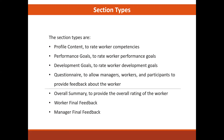There are also section types. First is profile content to rate workers' competencies. Then we have performance goals to rate workers' performance goals. Then we have development goals to rate worker development goals. Then we have questionnaires to allow manager, worker, and participant to provide feedback about the worker. Next we have overall summary to provide the overall rating of the worker. Then we have the worker's final feedback, and at last we have the manager final feedback. Note that competency sections with the text field type are not supported in the performance document. You must define a section for the task that appears in the process flow that requires a section. Each section corresponds to an evaluation topic or section in the performance document.